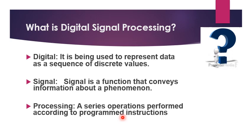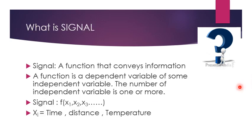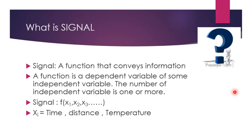First, we concentrate on what is a signal in digital signal processing. A signal is a function that conveys information. In more theoretical terms, a signal in mathematical form is a function — a dependent variable of one or more independent variables. We can represent it as f(x1, x2, x3), where xi could be time, distance, or temperature.